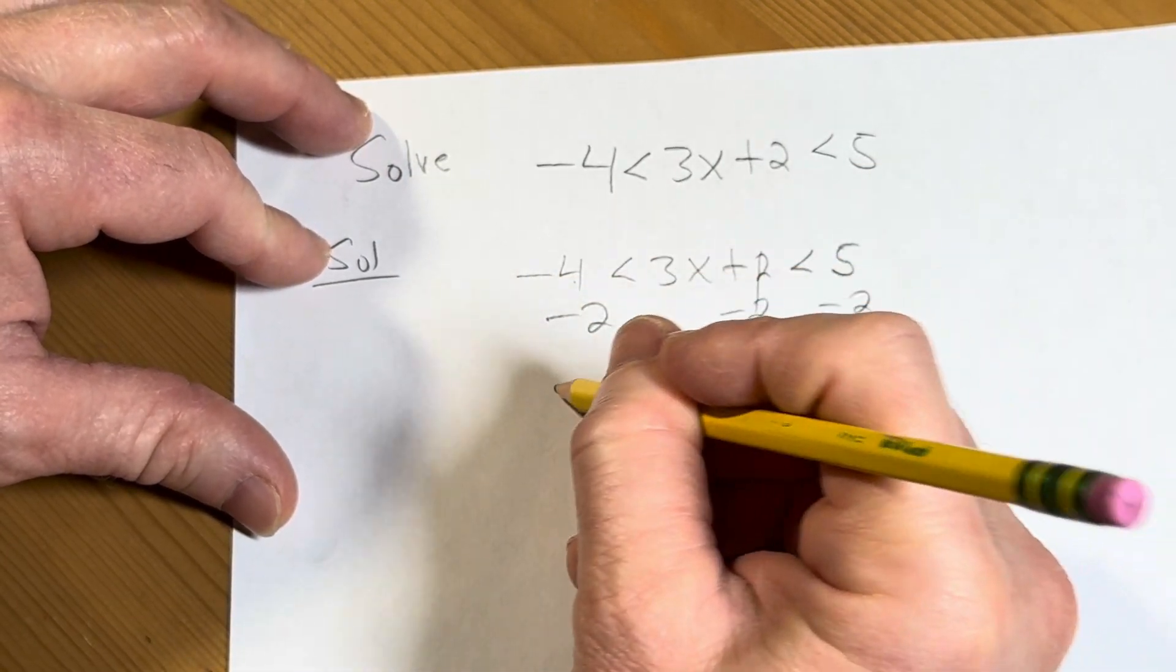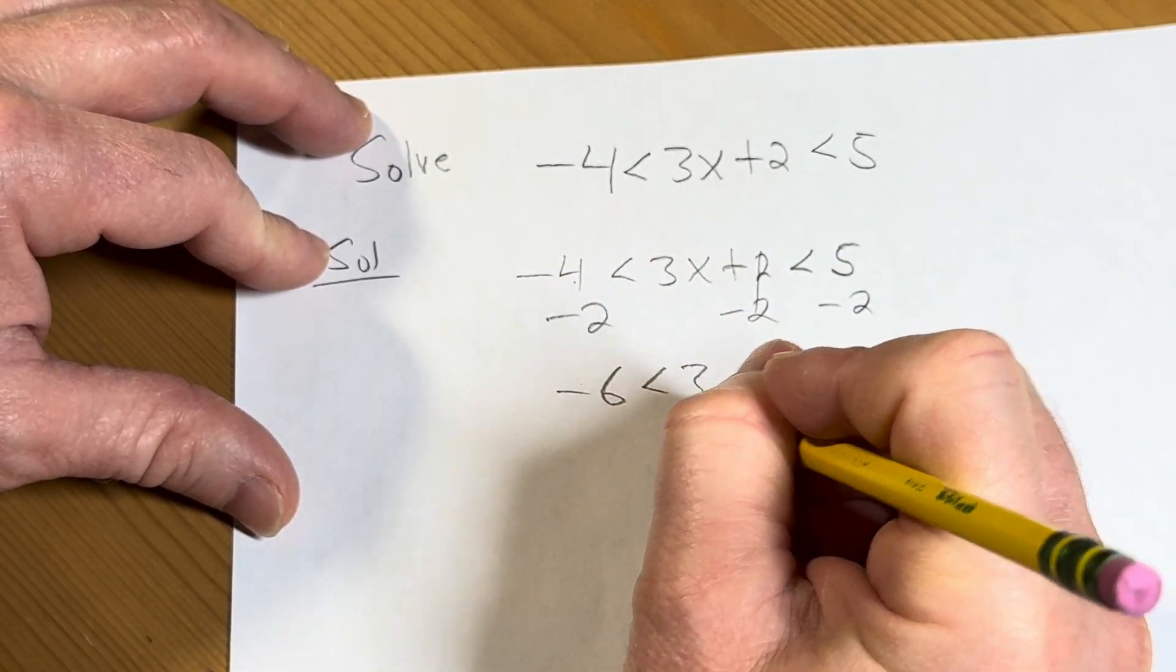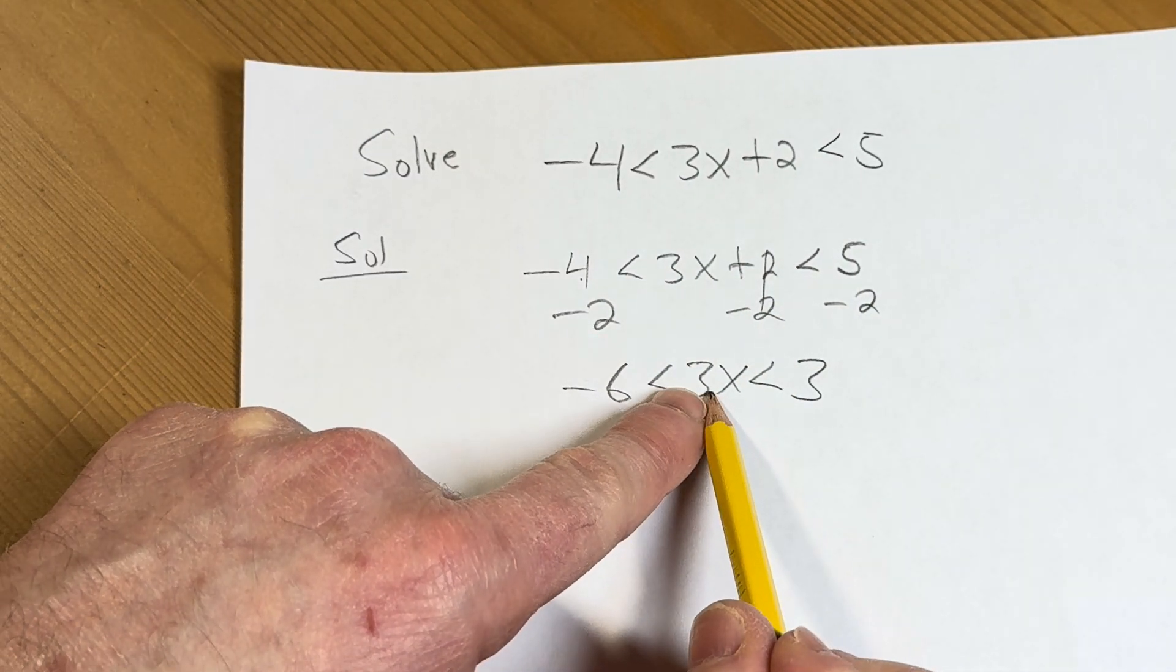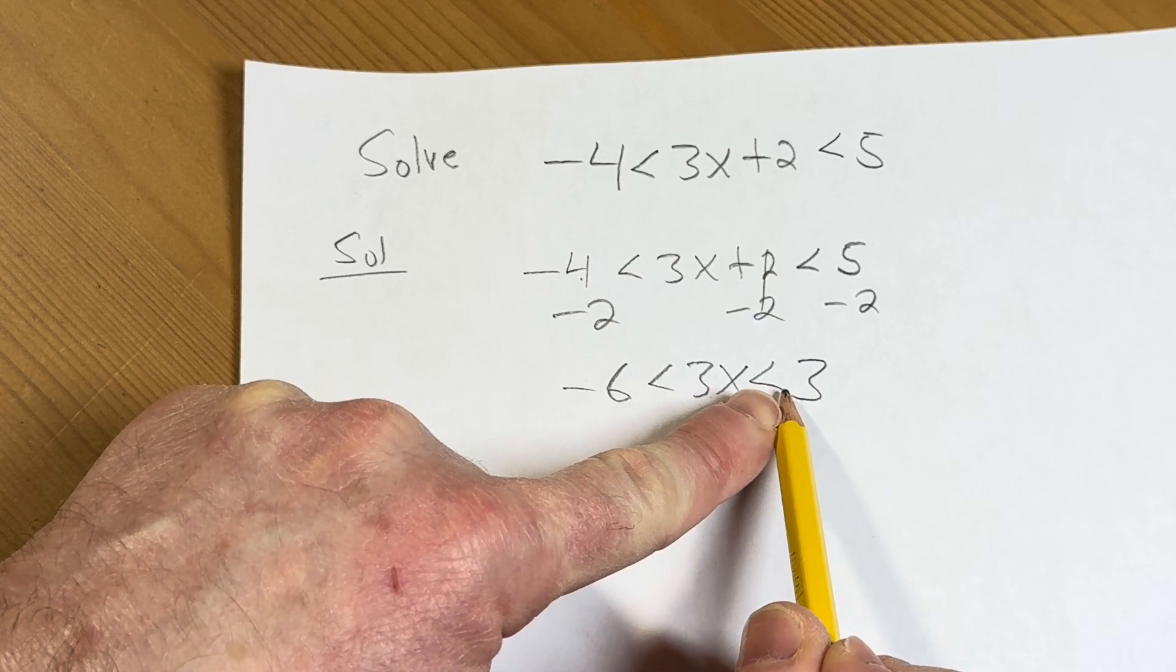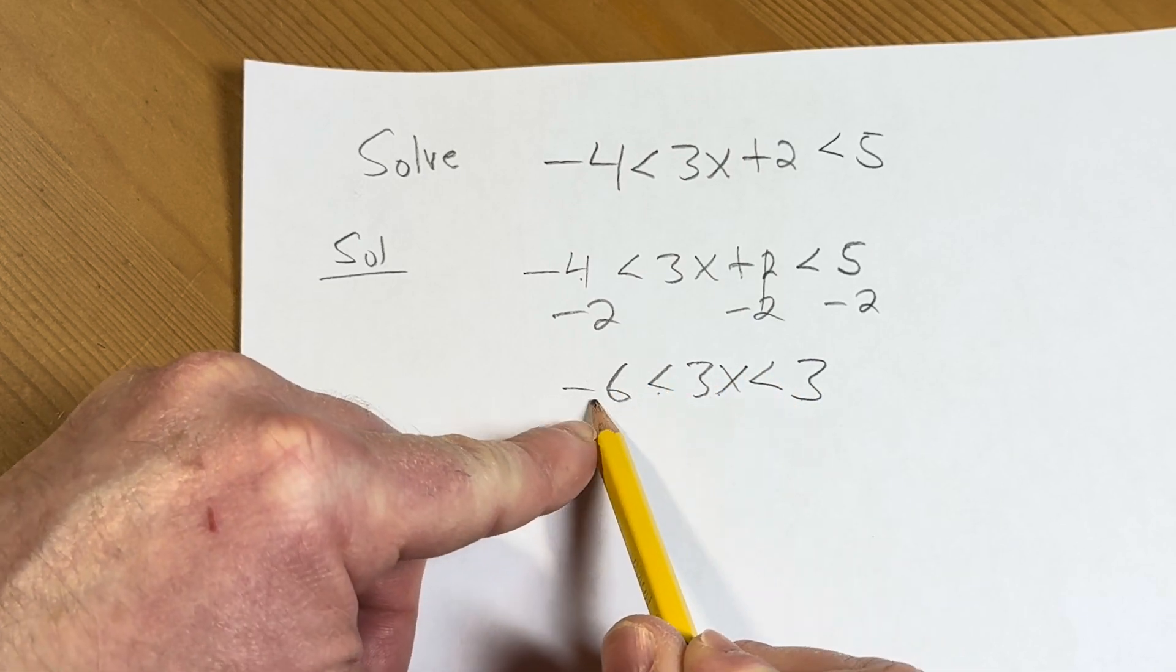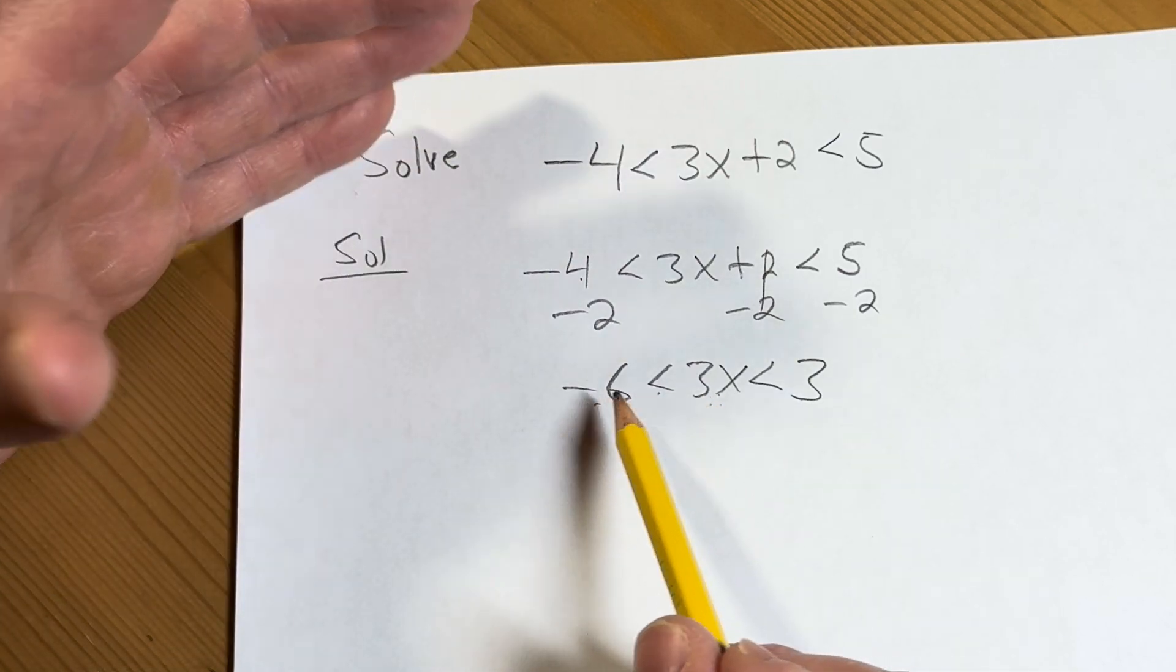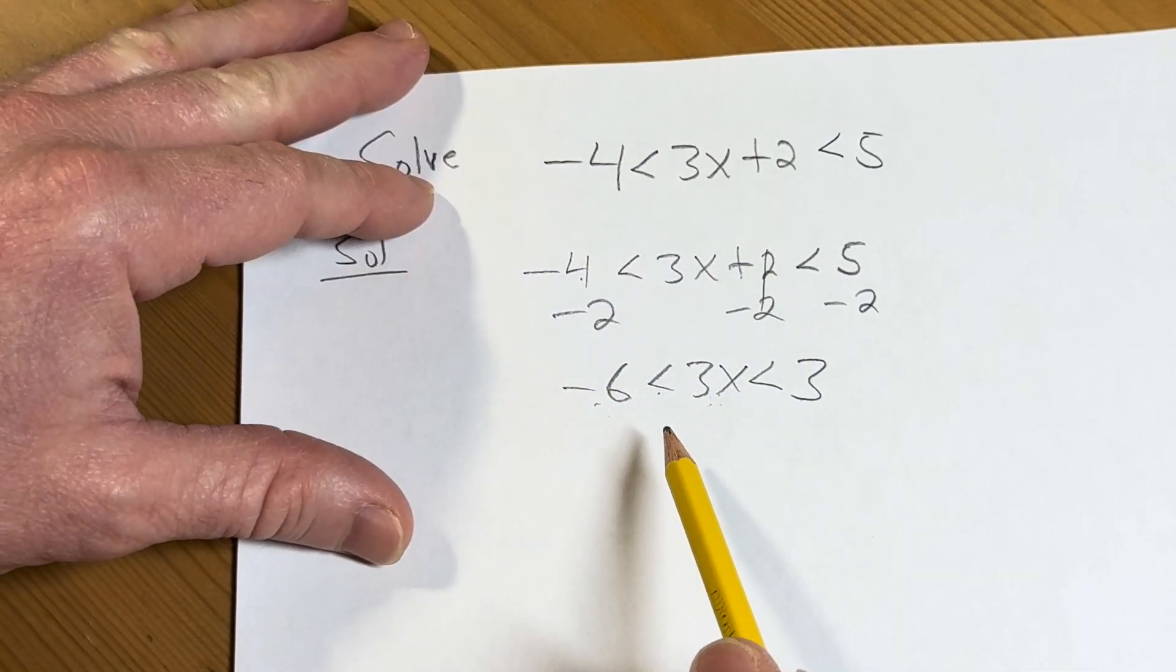So minus 4 minus 2 is minus 6, less than 3x. This is less than 3. Because this inequality says two things: it says 3x is less than 3, and 3x is bigger than negative 6. So one way to look at it is you could say 3x is between negative 6 and 3.